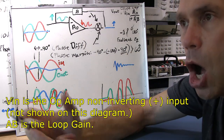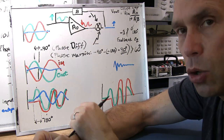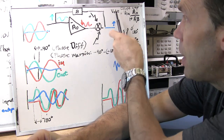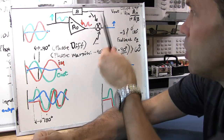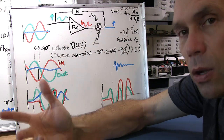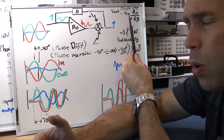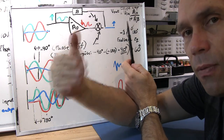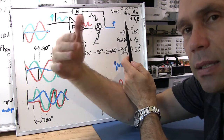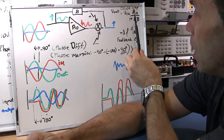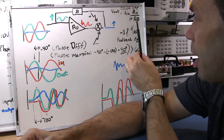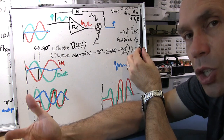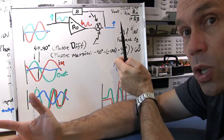Since we have (1 + AB) in the denominator, if that AB factor equals minus one, then the denominator becomes zero — and that's a situation you don't want, leading to infinite gain and an unstable circuit. So the two conditions which, when combined, lead to instability or oscillation in a feedback system are: a gain of one, which is zero dB — meaning no gain, you put one in and get one out — combined with 180 degrees of phase difference. That's the critical point to avoid.